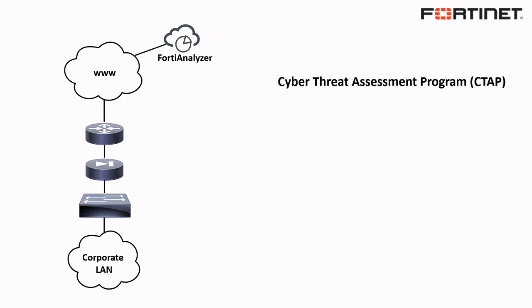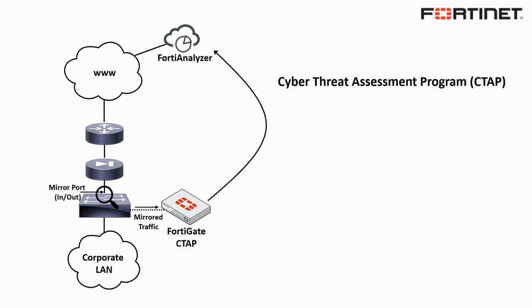Here we have a typical high-level network edge topology, and by simply spanning or mirroring ports on your existing DMZ switch we can quickly and easily deploy a FortiGate CTAP appliance with zero impact on your production traffic. This can also be done within VMware ESXi using a virtual machine that we can pre-configure for you.